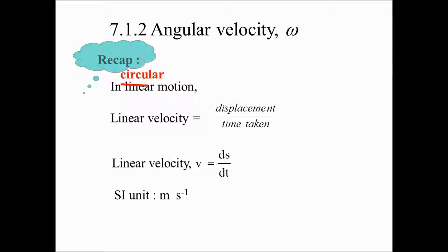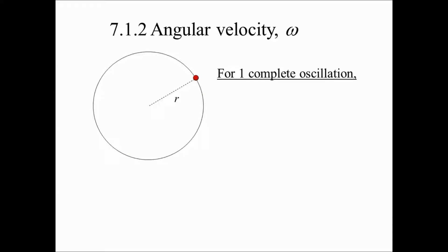So if you do an analogy, for circular motion, instead of linear velocity, we are interested in the angular velocity. Instead of linear displacement, we should be talking about angular displacement. And therefore, the formula for angular velocity omega will be d theta over dt. The unit for angle is radian. So the SI unit for angular velocity will be radian per second.